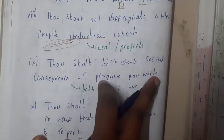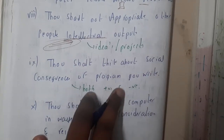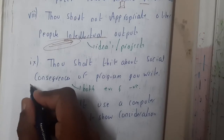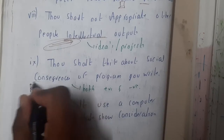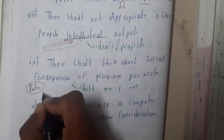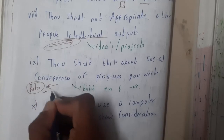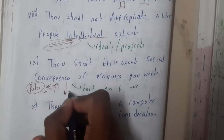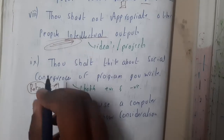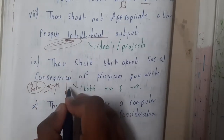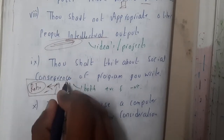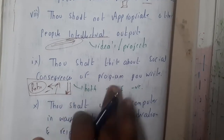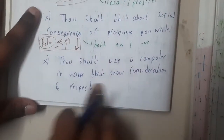The ninth commandment: think about the social consequences of the programs you write. Any program has both positive and negative effects. A great example is robotics — used properly, it can help humankind enormously, but used destructively, it can cause huge disaster. So write programs in a proper, responsible way.